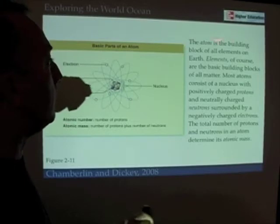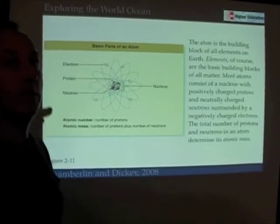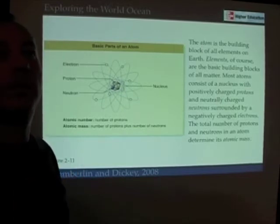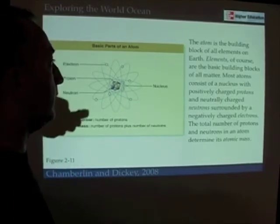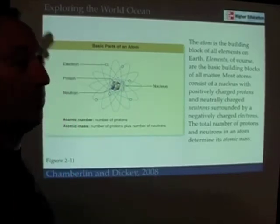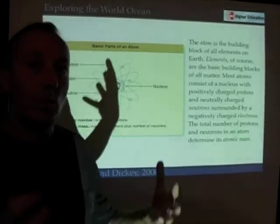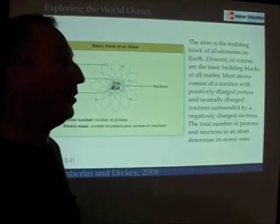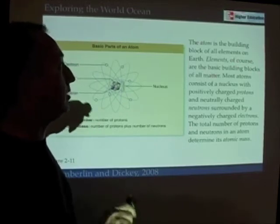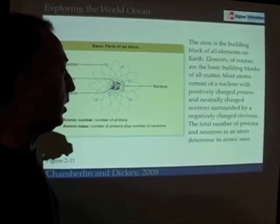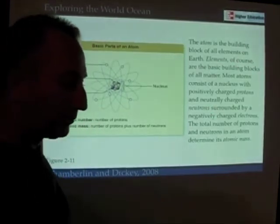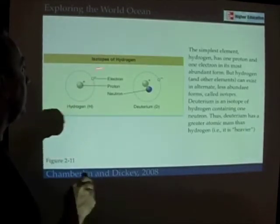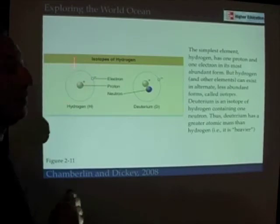As you know, atoms are the building blocks of all elements on Earth. There are about 90 or so natural elements, and probably 100 or so discovered since then. Elements are really what matter is made of — any material thing you see on Earth is made up of elements, and those elements are made up of atoms. Let's take a closer look at one element: hydrogen.